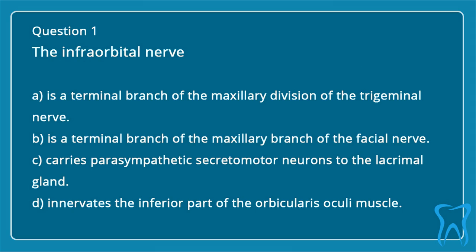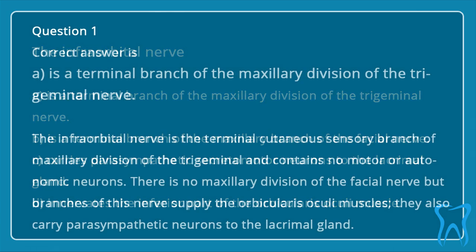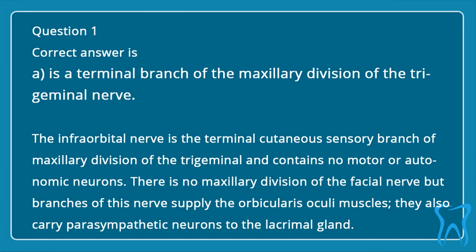The Infraorbital Nerve. a. Is a terminal branch of the maxillary division of the trigeminal nerve. b. Is a terminal branch of the maxillary branch of the facial nerve. c. Carries parasympathetic secretomotor neurons to the lacrimal gland. d. Innervates the inferior part of the orbicularis oculi muscle. Correct answer is a: Is a terminal branch of the maxillary division of the trigeminal nerve.